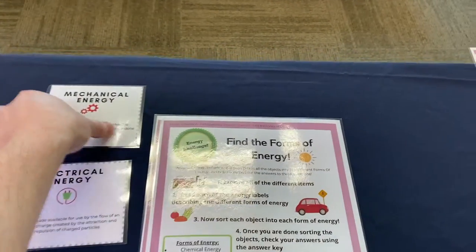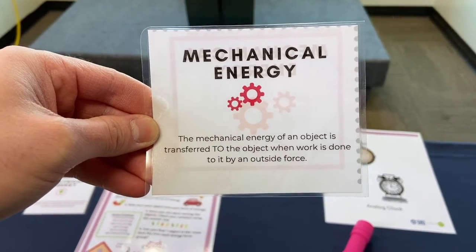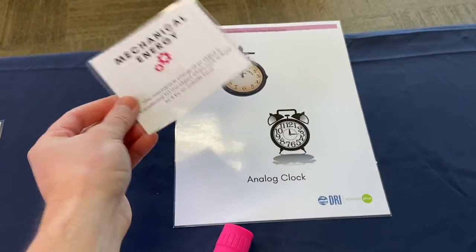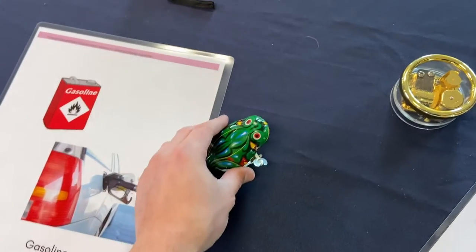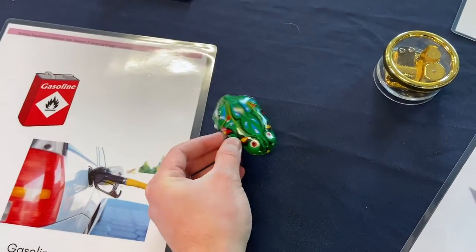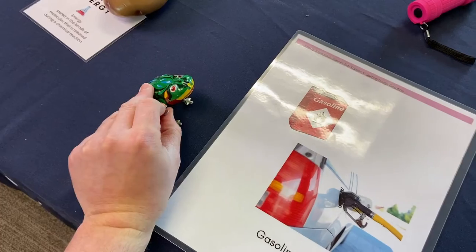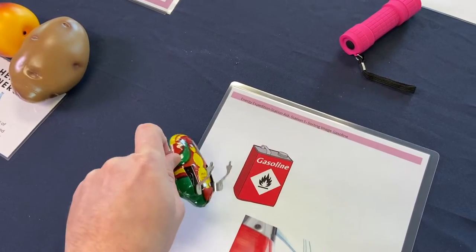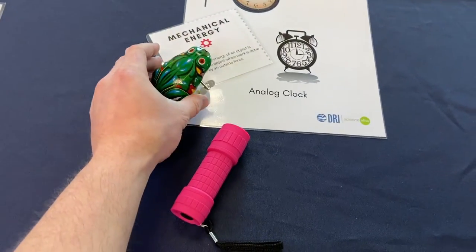Okay, mechanical energy. The mechanical energy of an object is transferred to the object when work is done to it by an outside force. An analog clock would be a perfect fit for that. And we've got this cute little frog — let's wind it up. It's a little tricky with one hand. We just need to wind it up a little bit and then watch this little guy go. Oh wow! There we go — he's going, he's headed over to mechanical energy. He knows he belongs over there.